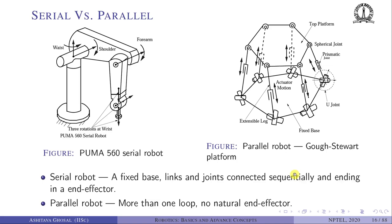A serial robot example is the PUMA robot originally made by Unimation Inc. — a six-degree-of-freedom robot with a shoulder, forearm, and a wrist formed by three intersecting joints, similar to a human arm and thus sometimes called anthropomorphic. In a serial robot, links are connected one after another sequentially.